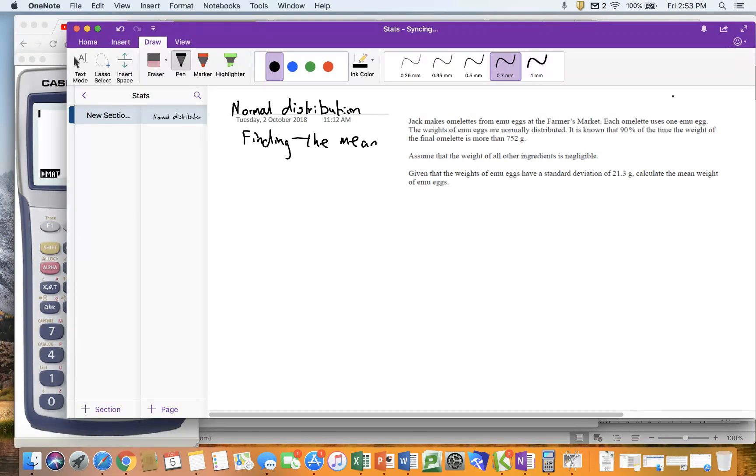So we've been given the fact that the weights of emu eggs are normally distributed. That's always a nice clue to tell us we're doing a normal distribution. We know that 90% of the time the weight of the final object is more than 752. Assume all other ingredients and eggshells, so that's basically saying we ignore them. Given the weight of emu eggs have a standard deviation of 21.3 grams.